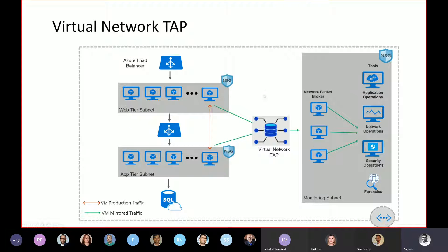What VTAP does is it's native to the cloud. There are no agents running in any of the VMs or any of the resources in your subscription. All you have is just the VTAP agent itself, running outside of this. And then you can have it send to either a collector VM, a collector scale set, or a load balancer if the throughput is really huge.